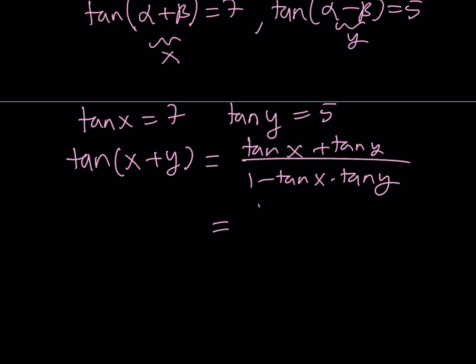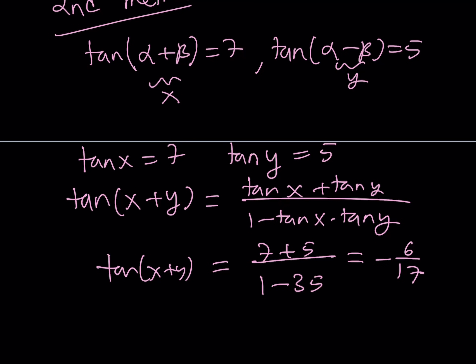Now this is 7 plus 5 divided by 1 minus 7 times 5, which is 35. So tangent X plus Y can be written as 12 over negative 34, which should be simplified as negative 6 over 17. Now here's one thing I want you to notice: X is alpha plus beta, Y is alpha minus beta.